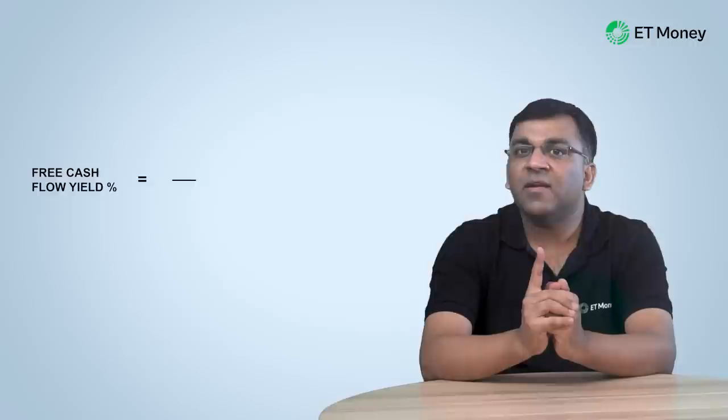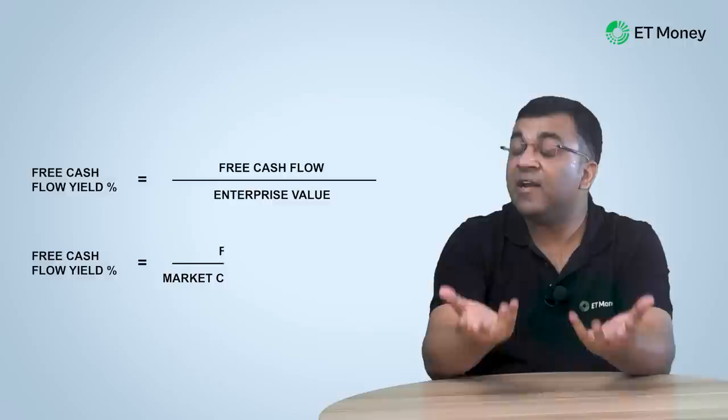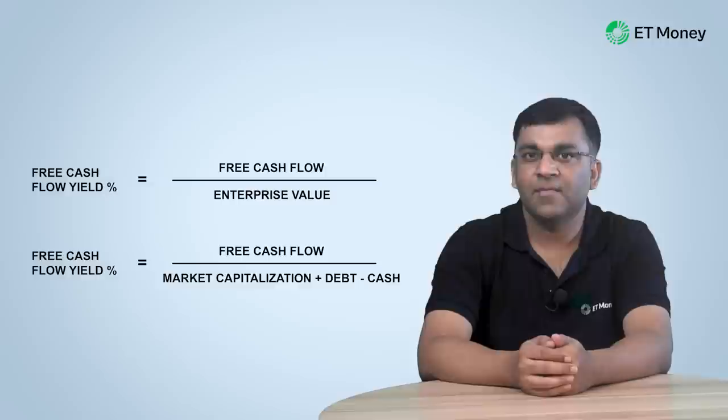Let's come to the two parts of our formula. The first is the free cash flow yield, derived by dividing FCF by the company's enterprise value, where enterprise value represents the total value of the company after accounting for its debt and cash on hand. The FCF yield gives a more accurate representation of the returns a shareholder can expect compared to net profits, which are subject to manipulation. The higher the FCF yield, the more attractive the investment. For seasoned investors, FCF yield is a far superior valuation technique compared to the P/E ratio, dividend yield, or price-to-book ratio.